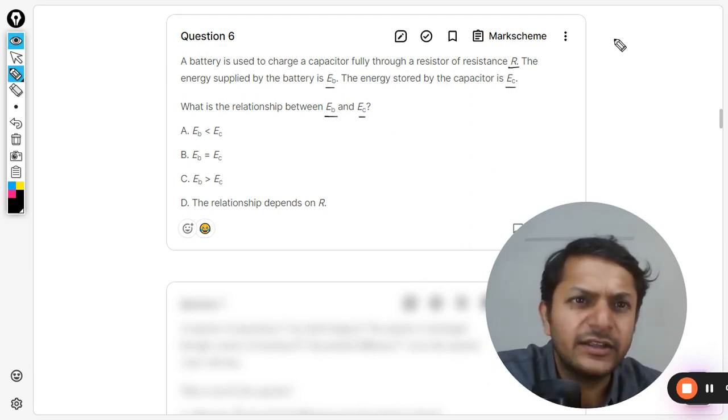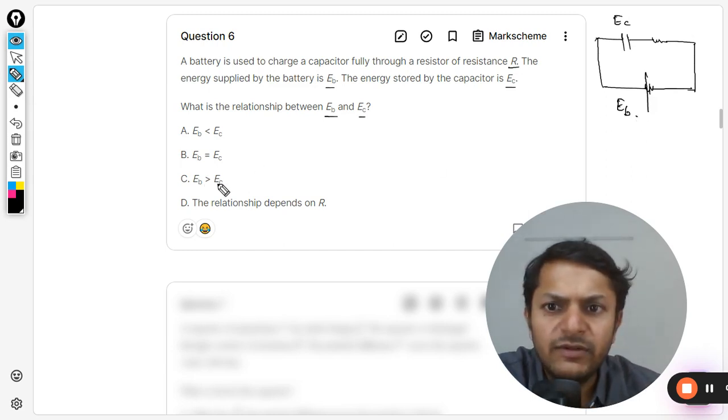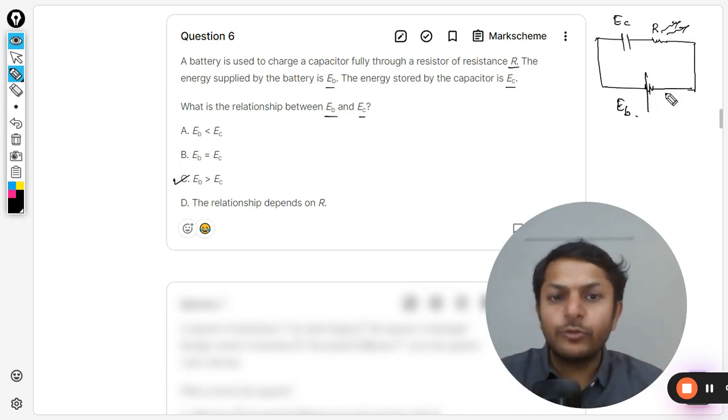It's kind of clear here. Obviously the energy stored in the capacitor will be far less than the energy provided by the battery. So Eb will be greater than Ec. There is no doubt the answer will be C, because there will be losses in the resistor.